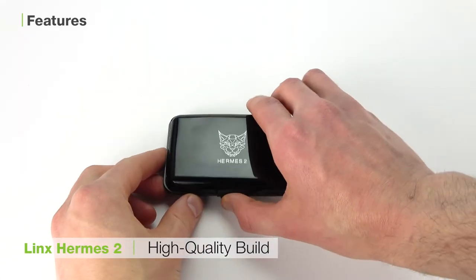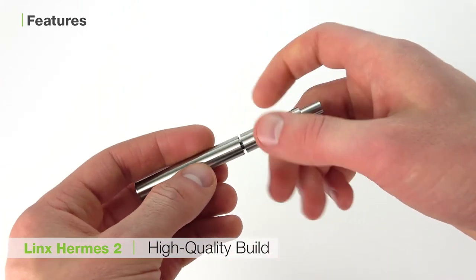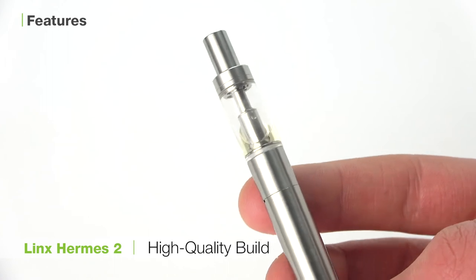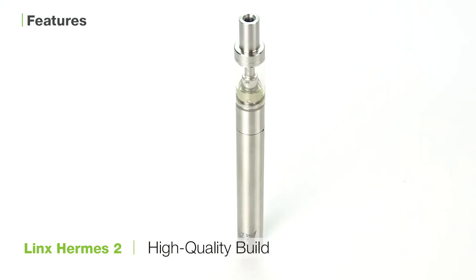The third is the high-quality build. This vaporizer is constructed with a glass tank atomizer, as well as a stainless steel shell and mouthpiece. While it's tiny and svelte, we have no doubt the Lynx Hermes II will hold up decently for us.